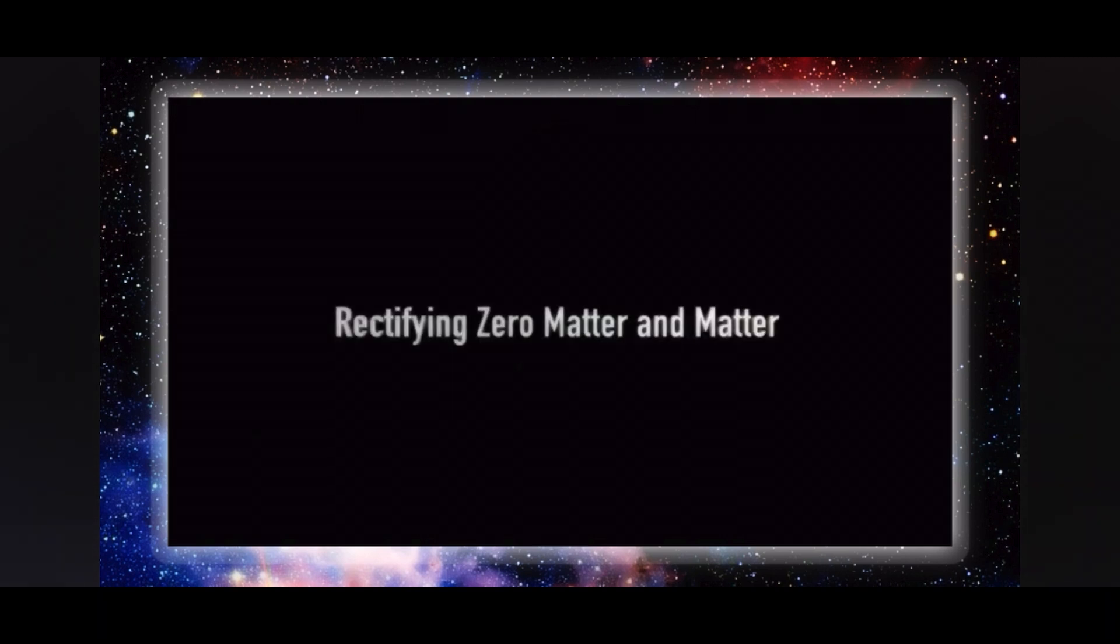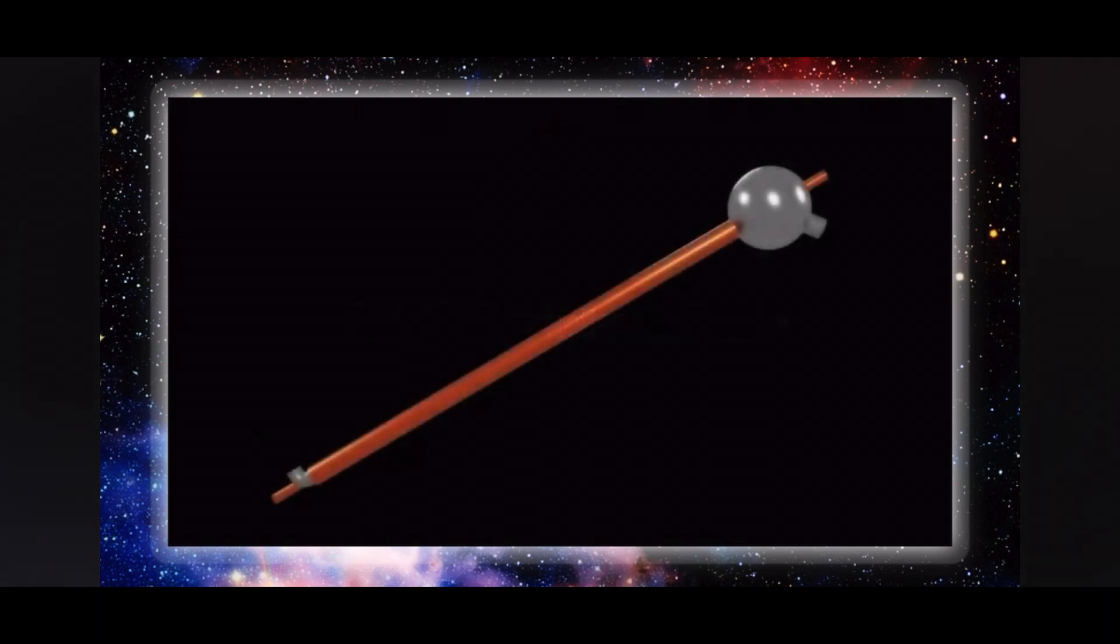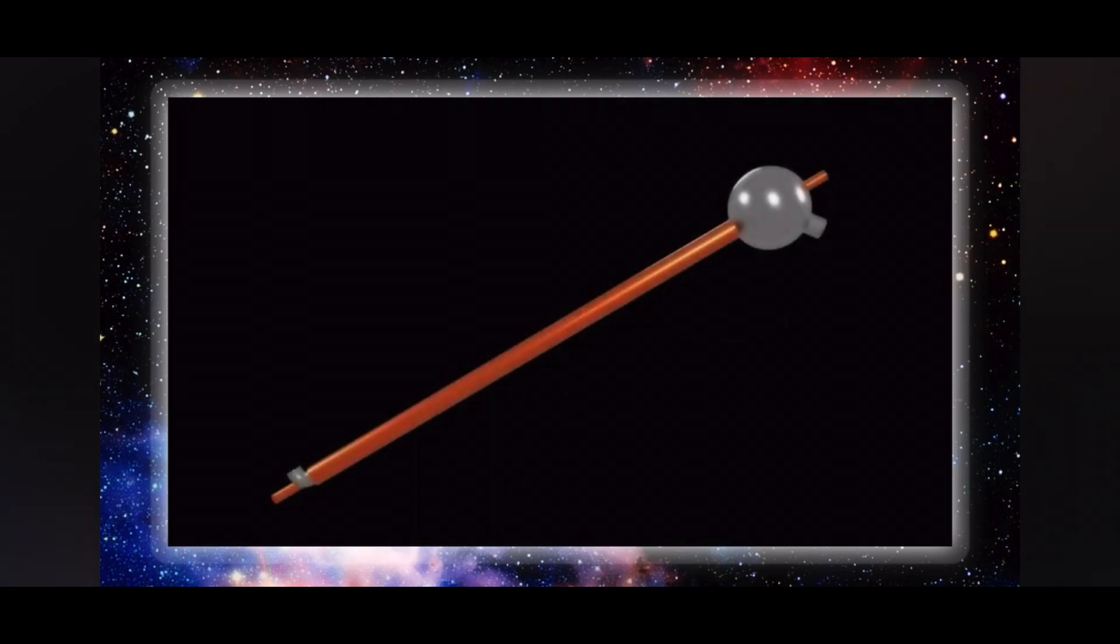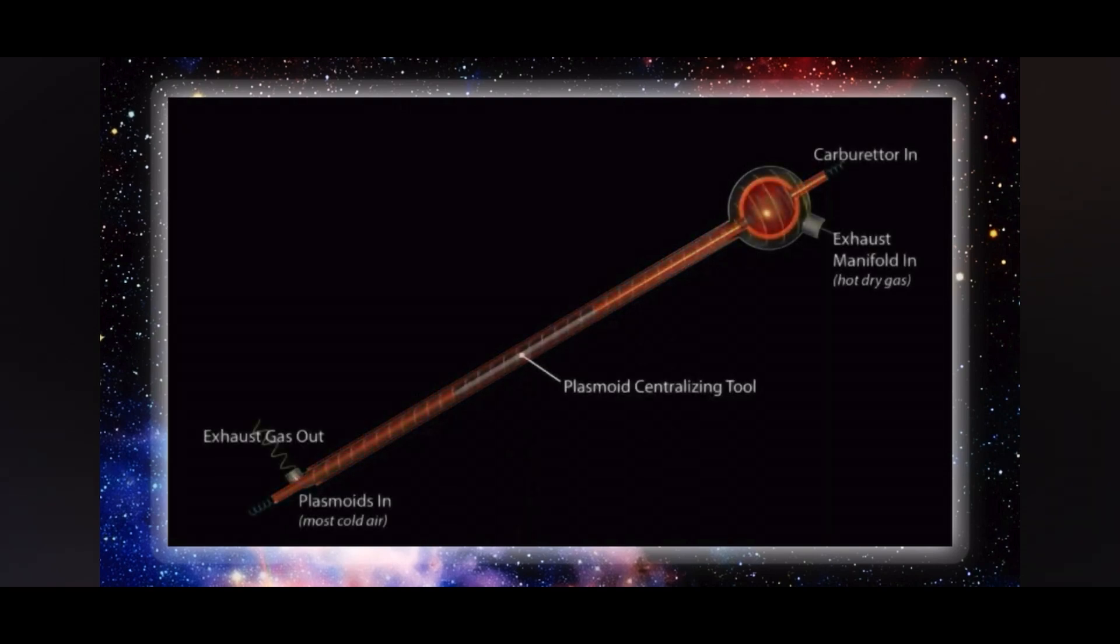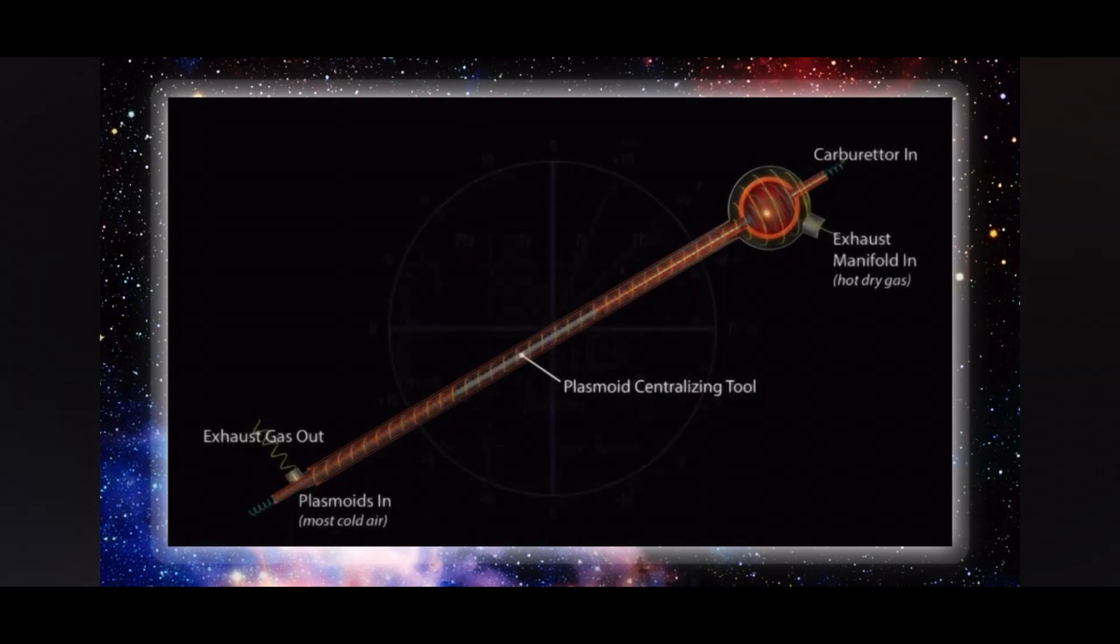Rectifying the zero matter, which operates on a base of 12, and matter, which operates on a base of 16, is essential to any torus-spiral collision-based fusion device capable of operating at room temperature and above. This principle is demonstrated by the operation of our plasmoid thunderstorm generator.